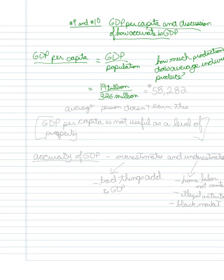19 trillion divided by 326 million, that gives me about $58,282 per capita.